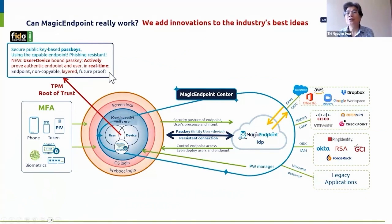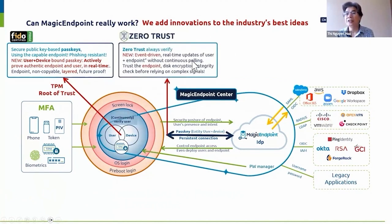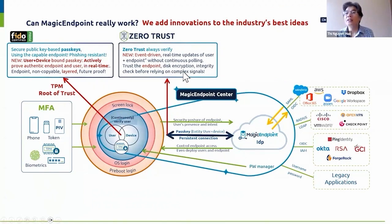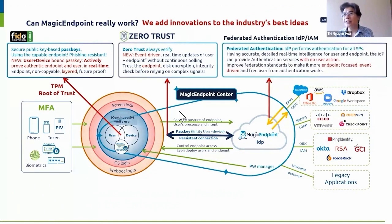Beyond FIDO, we also know that zero trust is the best idea in these solutions. But unlike the concept of continuous verification, we use event-driven verification, because we trust the endpoint — we trust the endpoint to provide event-driven updates, and we trust it because we protect it with full disk encryption, integrity checks, no manipulation of the code, and so on. Furthermore, federated authentication like SAML and OIDC are very important for authentication, but the current protocol is not very endpoint-focused and not very event-driven focused. By adding these two ideas, we can make it really very secure and completely easy for users with no user action.